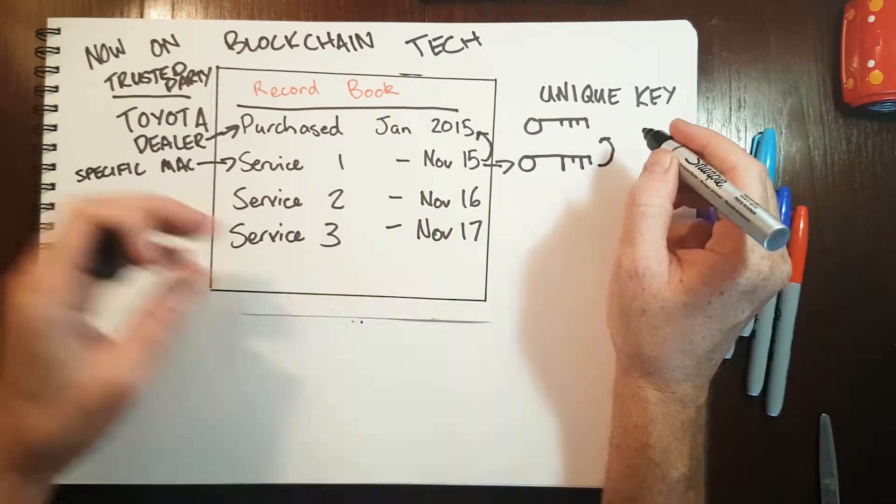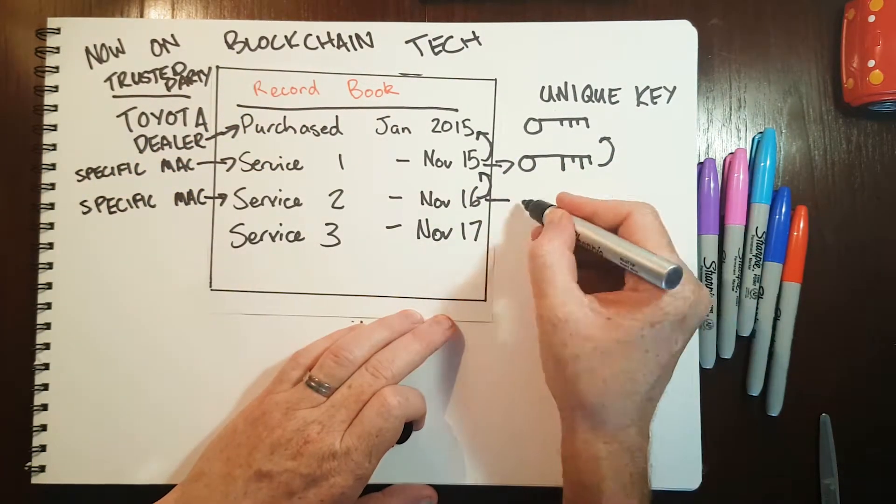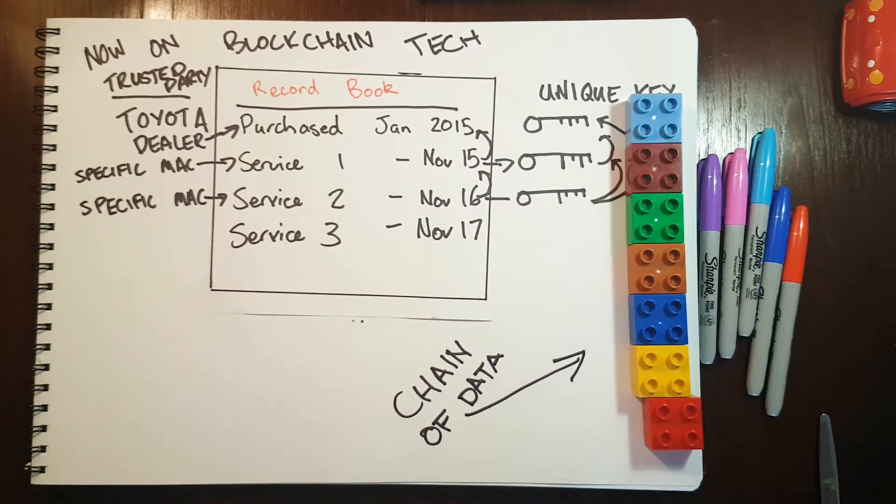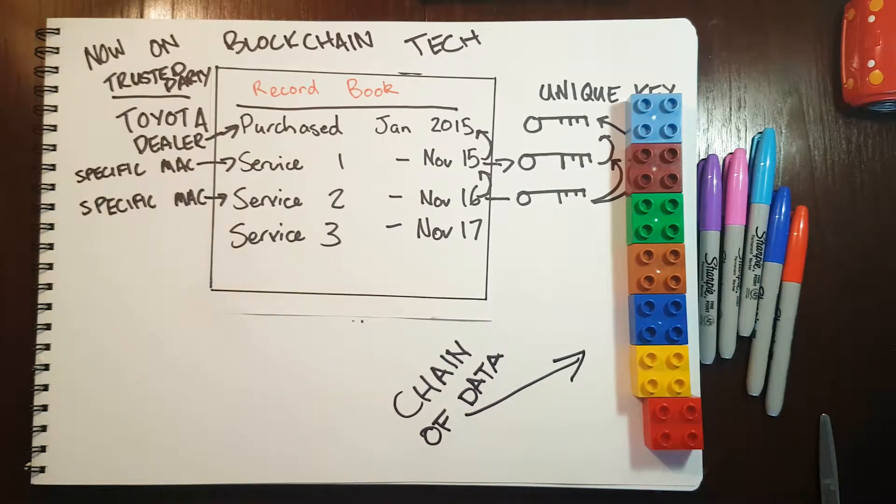The key is created using cryptography and it is unhackable. New records build upon existing records with each new key not just securing that record but locking all previous data in a secure chain of data, a blockchain.